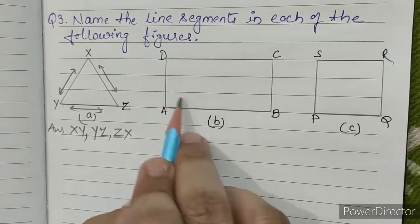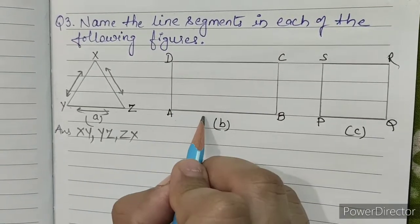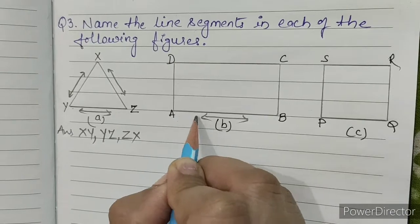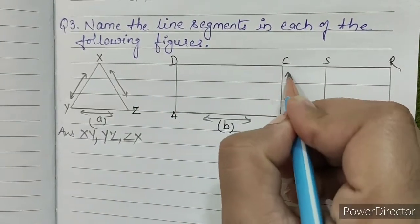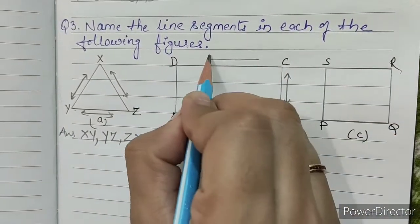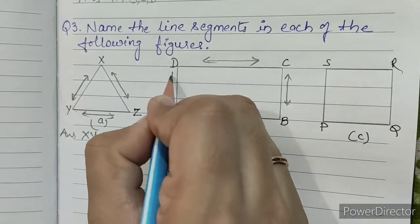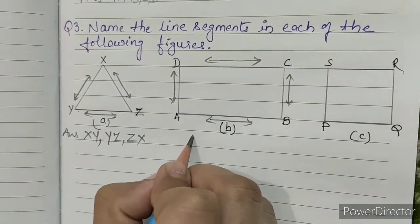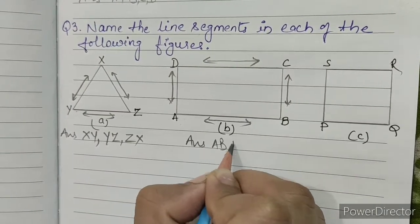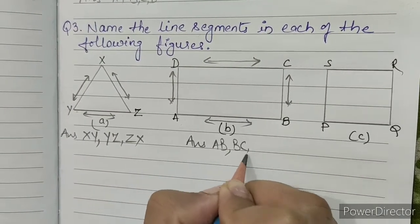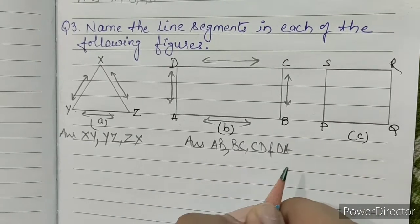B, this is a rectangle. In the rectangle we can see AB, BC, CD and DA as the line segments. So our answer is AB, BC, CD and DA.